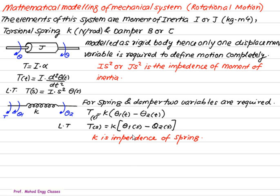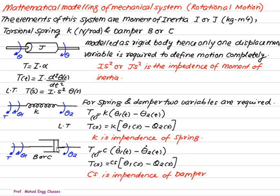For K, impedance equals K. Similarly, the damper uses the same arrangement as in translational systems. It is also flexible, so we require two variables: theta one and theta two. Torque is applied on theta one, so the net difference is theta one minus theta two. The damper, represented by B or C, gives T(t) = C · [θ̇₁(t) − θ̇₂(t)]. Taking the Laplace transform: T(s) = C · s · [θ₁(s) − θ₂(s)]. Thus Cs (or Bs) is the impedance of the damper.